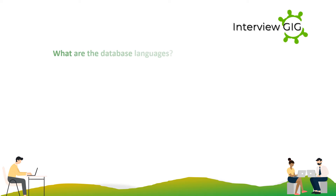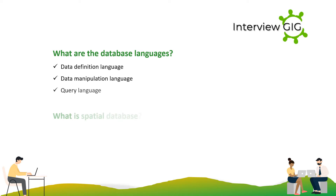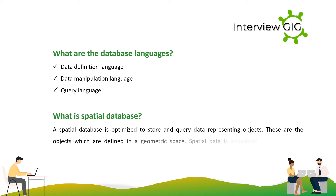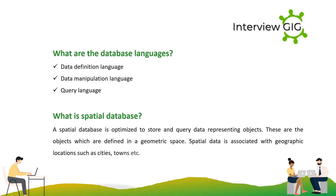Database languages include Data Definition Language, Data Manipulation Language, and Query Language. A spatial database is optimized to store and query data representing objects defined in a geometric space. Spatial data is associated with geographic locations such as cities, towns, etc.